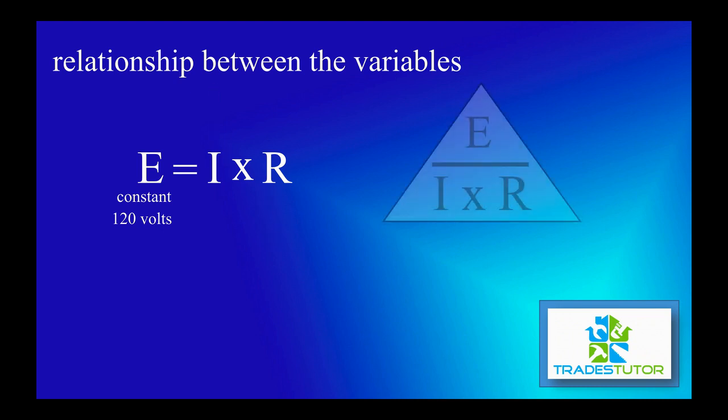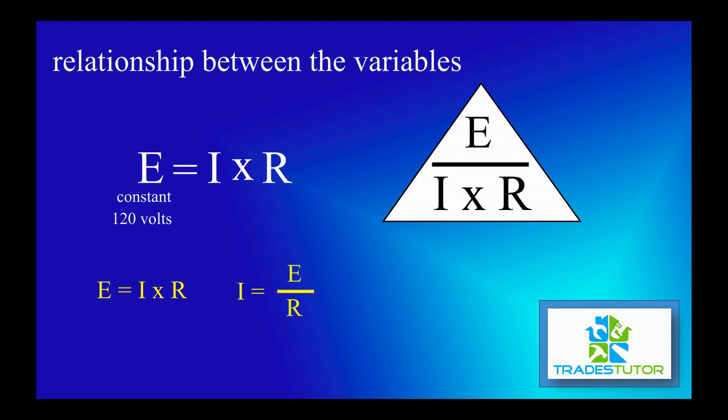What students like to do is put the formula in a triangle. And from that, you can derive the three different versions of this formula. The first one we've already talked about. The second one is, well, you solve for I. And then when you have a triangle like this, what I refers to or I equals is E over R. Same thing for R is E over I.